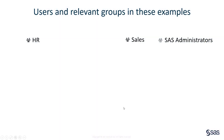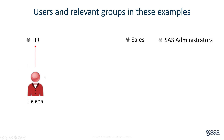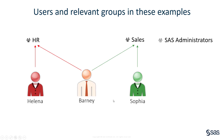In this demonstration, there are going to be three groups that are relevant to what we're looking at: the HR group, the sales group, and SAS administrators, because we're going to set permissions on the table and the underlying data for those three groups. We've got four users: Helena, a member of HR; Sophia, a member of sales; Barney, who is in both HR and sales; and finally the GelADM user, who's a member of the SAS administrators group.